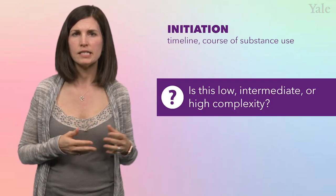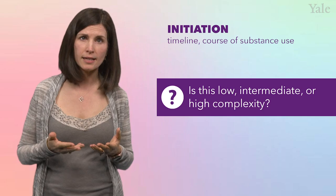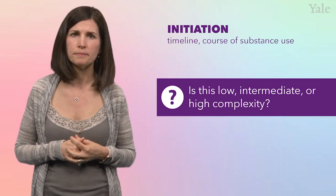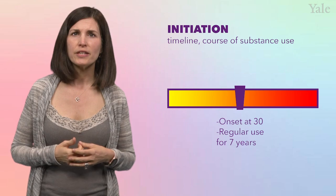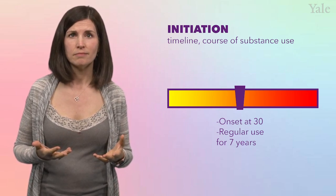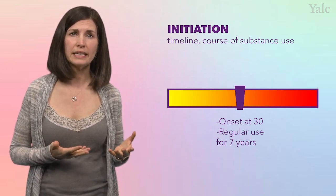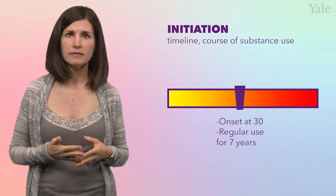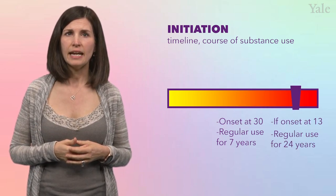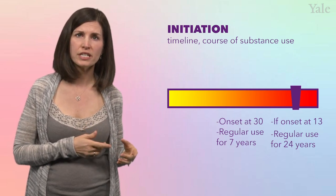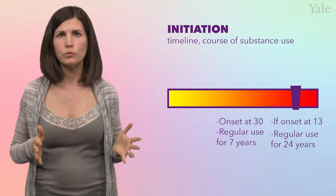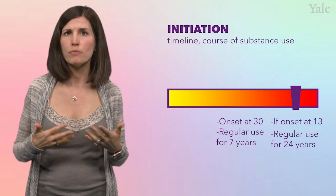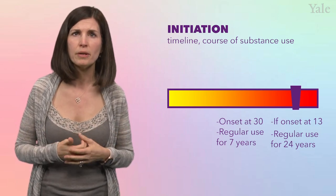So what do you think? Is this low complexity, intermediate complexity, or high complexity with regards to initiation? I would label this as intermediate complexity. Annabeth began using regularly as an adult, not as an adolescent, and she's been using for seven years. If, on the other hand, Annabeth had started using at age 13 and been using continually for 24 years, this would cue you to consider that more intensive and longer treatment might be needed.